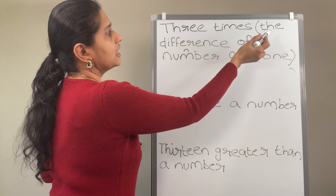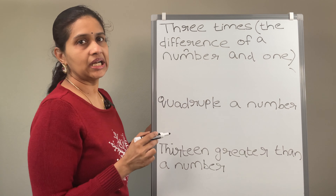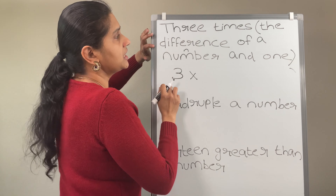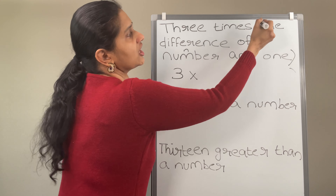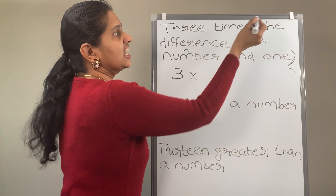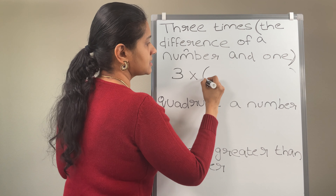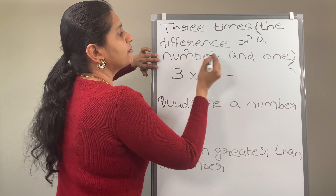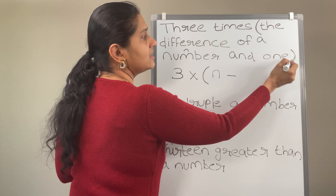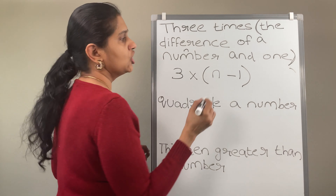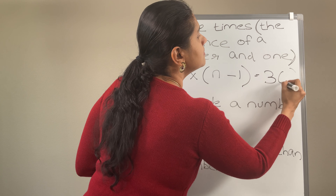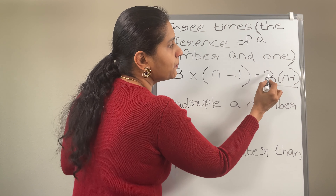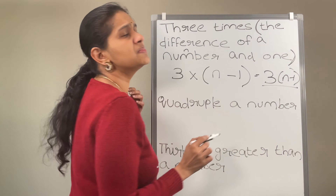3 times the difference of a number and 1. 3 times means 3 multiplied by — what? The difference of a number and 1. This statement should be in parenthesis. The difference of a number means you are going to subtract something — of a number, which is n, and 1. So n minus 1. So that is going to be 3 times (n minus 1). Instead of writing the multiplication symbol, you can simply put the parenthesis after the 3: 3(n minus 1).